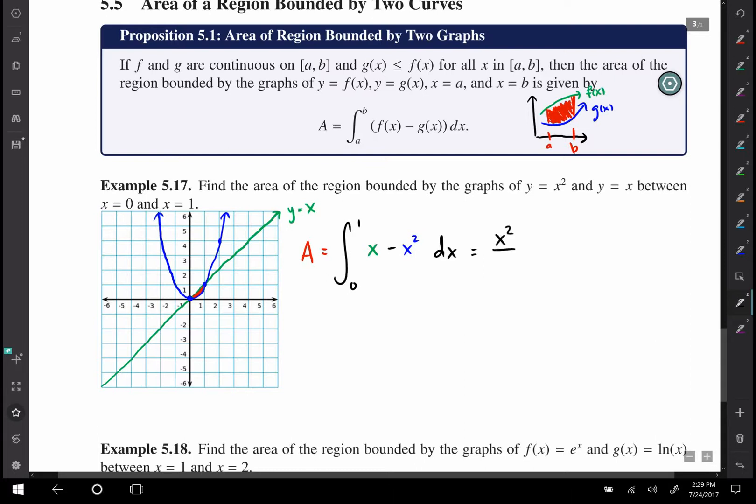Now that's pretty easy to integrate. That's just going to be x² over 2 minus x³ over 3, and we need to plug in our upper and lower bounds, 1 and 0. So to get that area, you get 1² over 2 minus 1³ over 3.